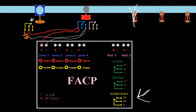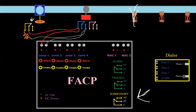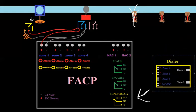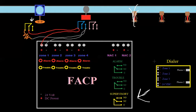I want to go back to the supervisory idea. I copied the dialer we looked at a couple videos ago. The first few times we only used zones one and two — alarm and trouble. Usually when you have supervisory, you'll use zone three for supervisory.